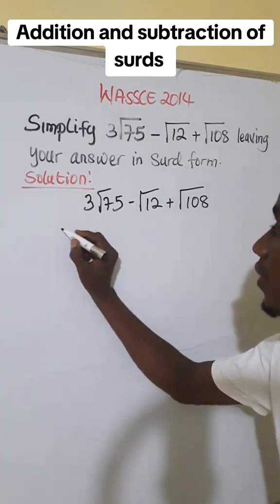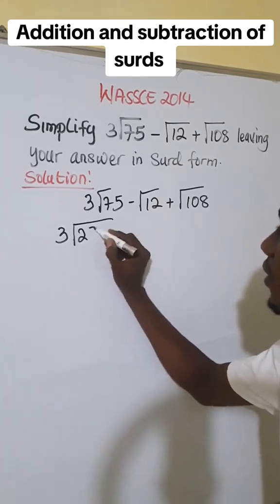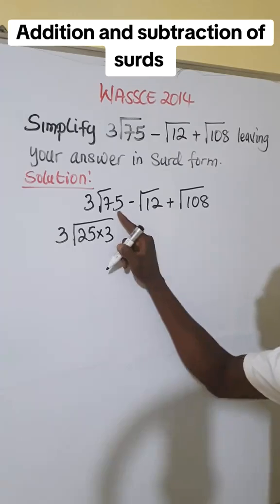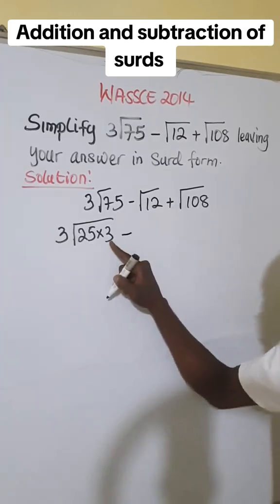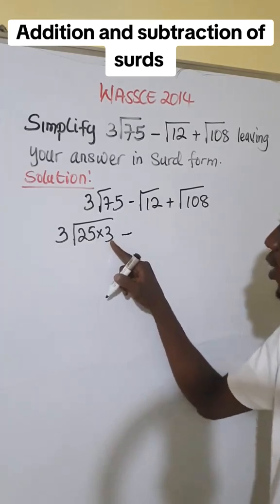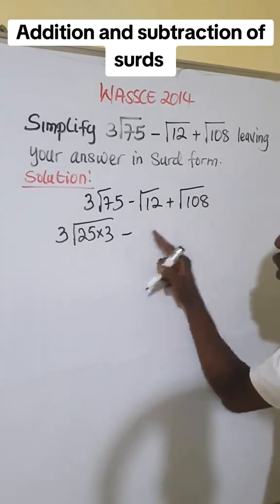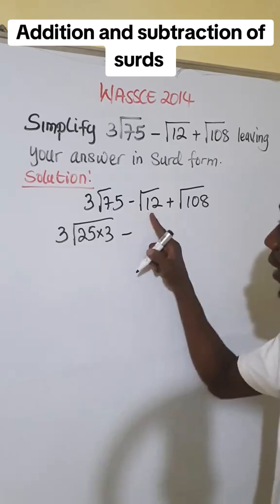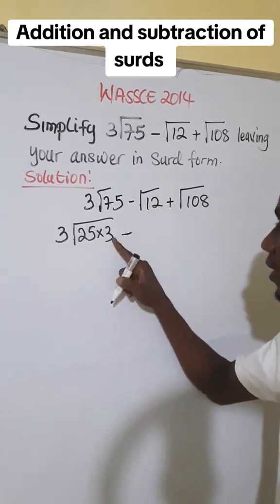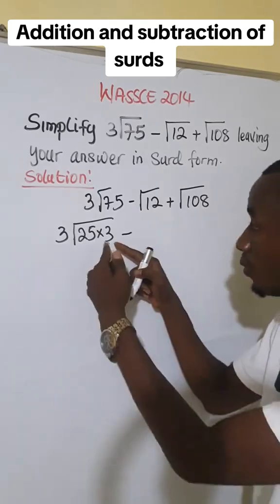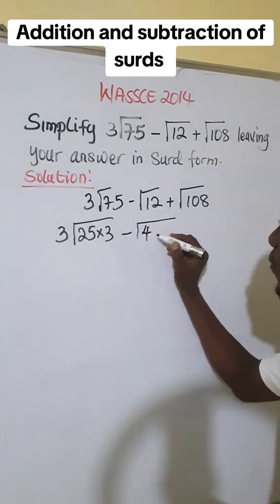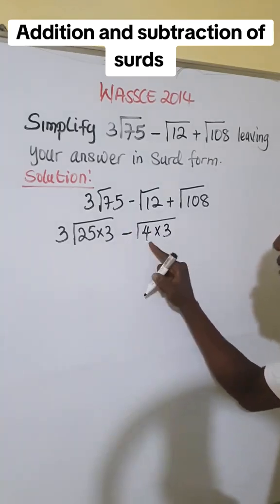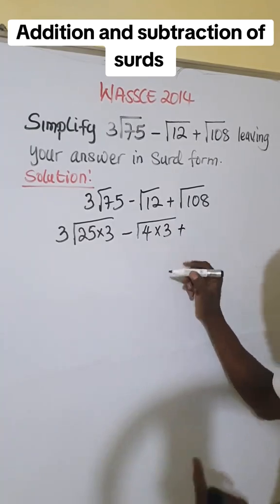Here we have 25 multiplied by 3 will give us 75. 25 is a perfect square. Mind you, 3 is not a perfect square, so we are going to ensure it appears in all of these ones. If you want to ensure 3 appears here, just divide 12 by 3. 12 by 3 will give us 4. So for 12, we can multiply 4 times 3. 4 is a perfect square.